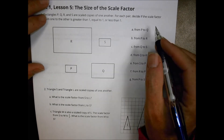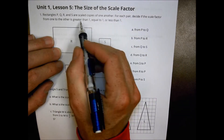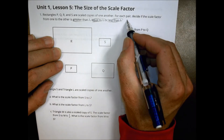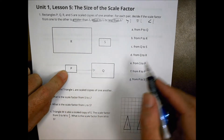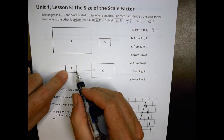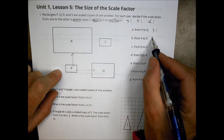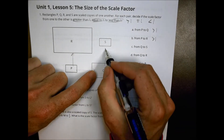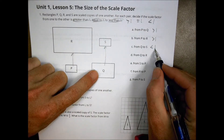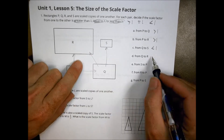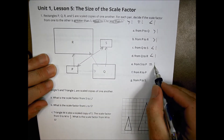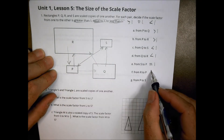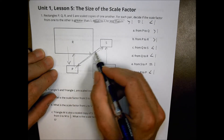On today's homework, for each pair of shapes, decide whether the scale factor is greater than 1, equal to 1, or less than 1. From P to Q — increasing in size — greater than 1. From P to R — still increasing — greater than 1. From Q to S — getting smaller — less than 1. From Q to R — also smaller — less than 1. From S to P — looks the same — equal to 1. From R to P — getting smaller — less than 1. From P to S — same — equal to 1.